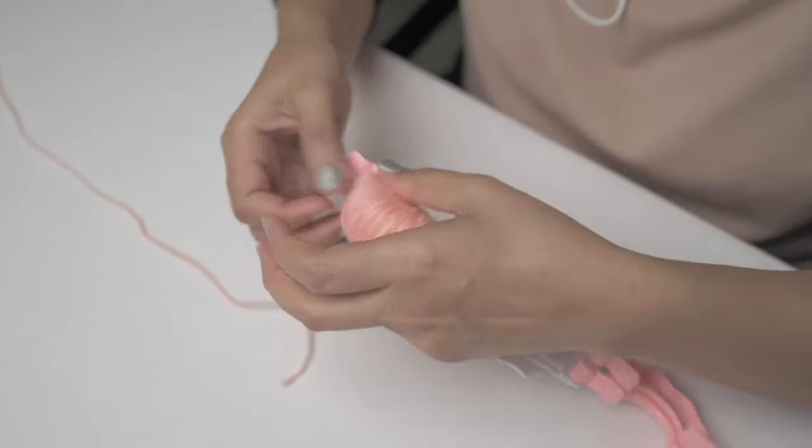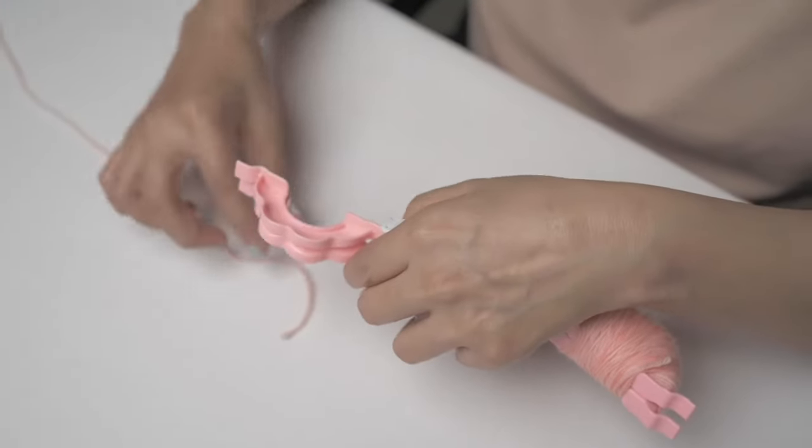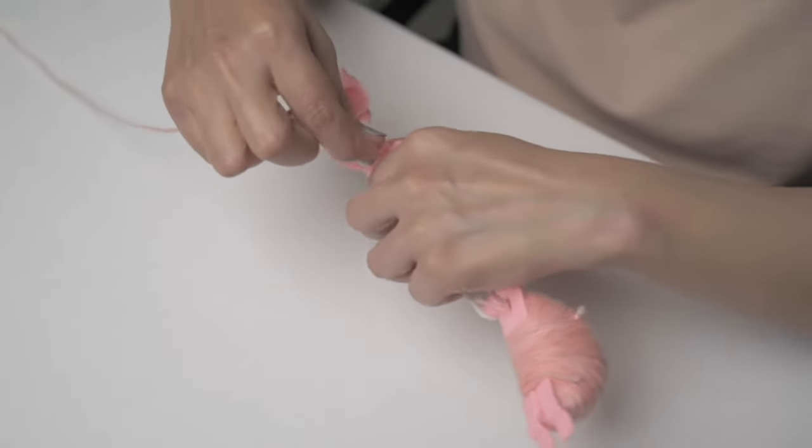Open up your pom-pom maker and wrap your yarn around and around each side of the tool, and then snip off your yarn ends.